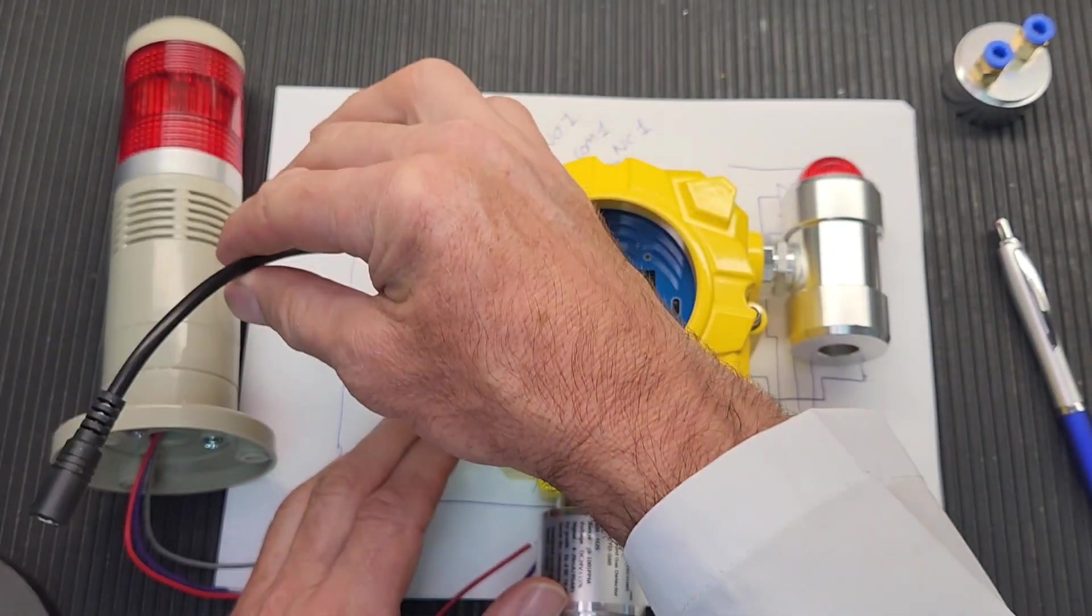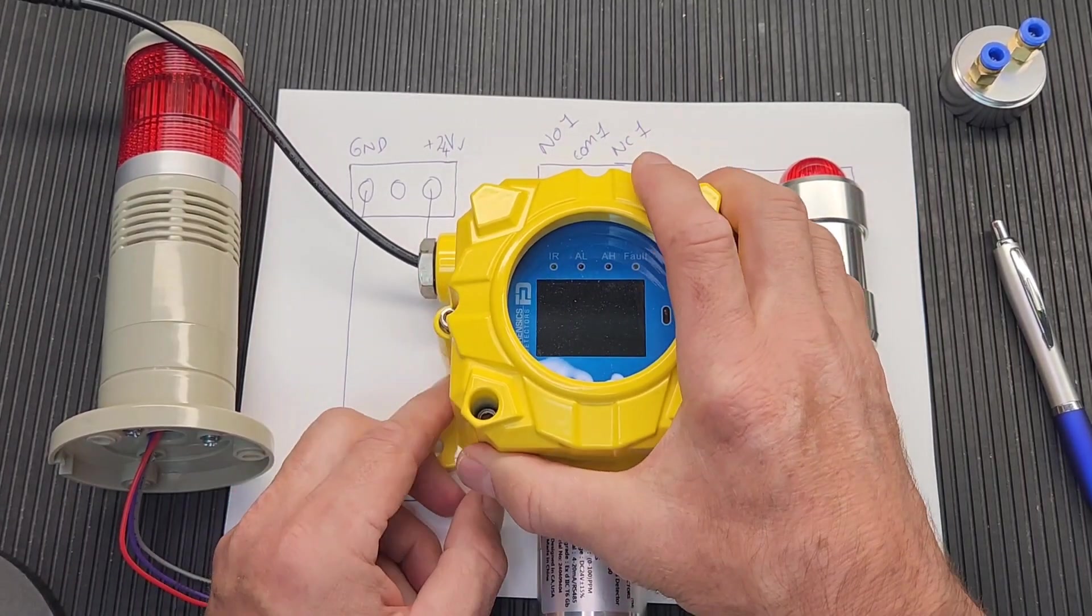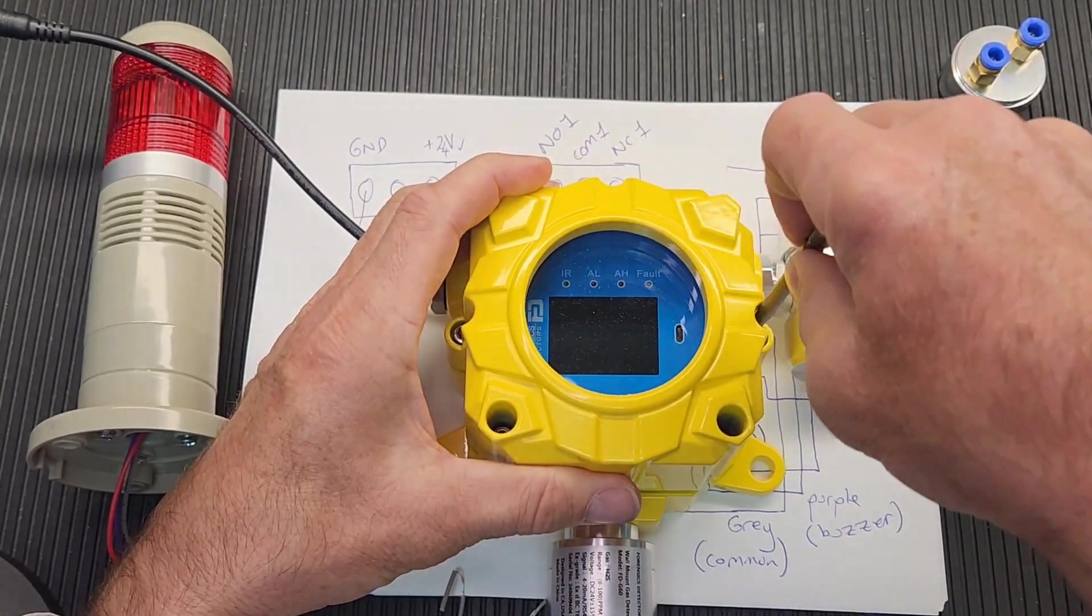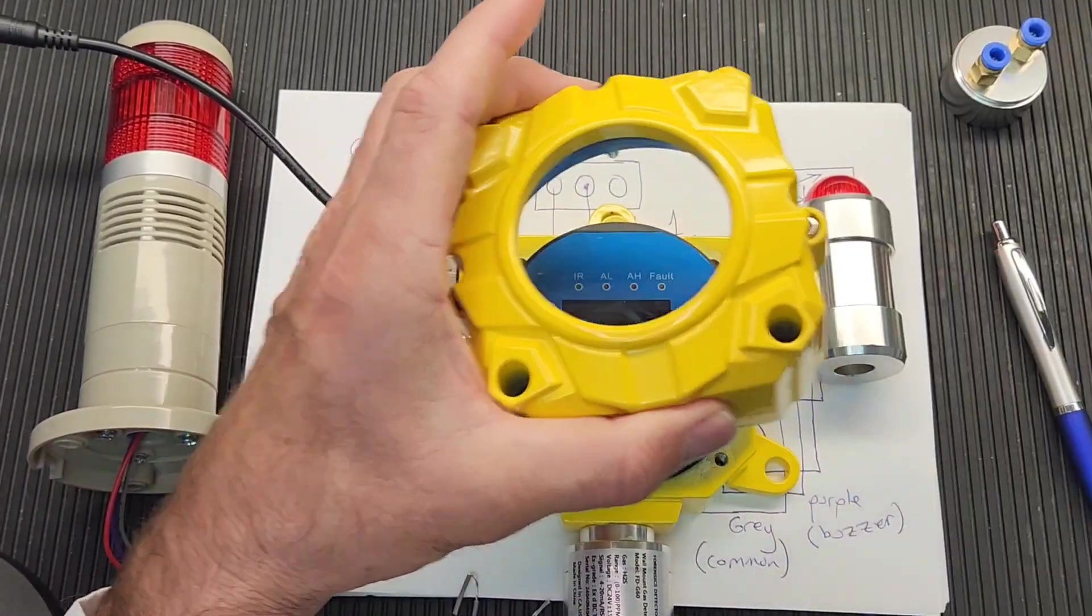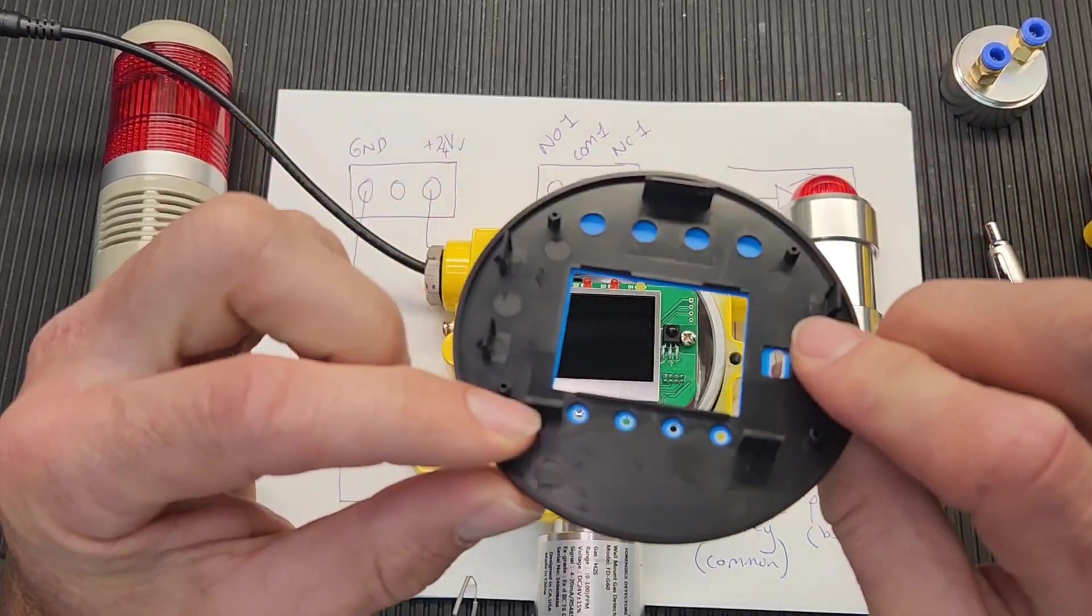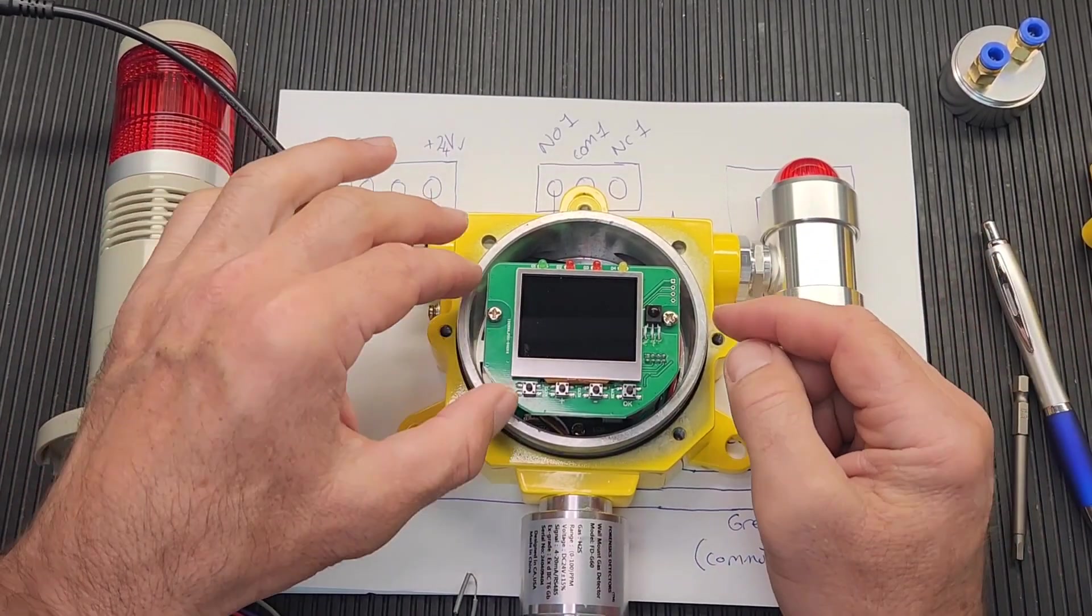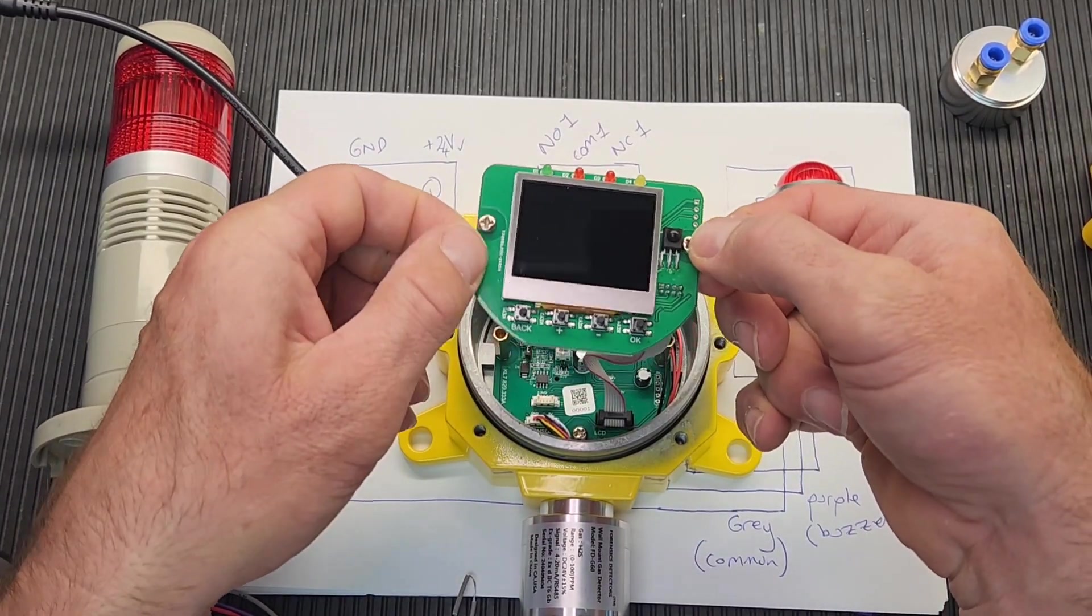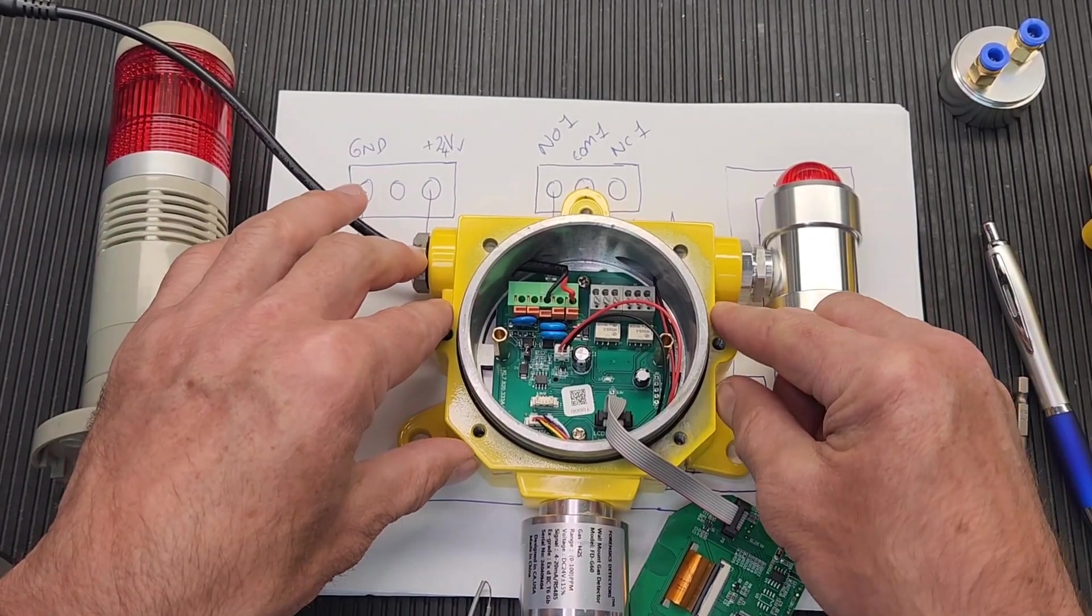The first thing you must do is take off the front cover. Before that, make sure there's no power to the unit. Make sure everything is safe. Go ahead, take off the Allen key bolts. Take those off very quickly. Next, you want to take off the front cover. Just lift it on the edge there. It's got a few clips. Unclip it. Very straightforward.